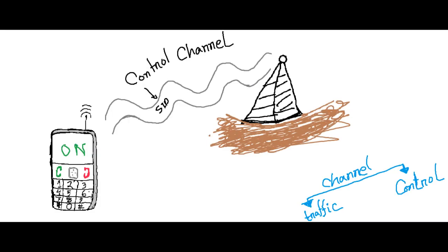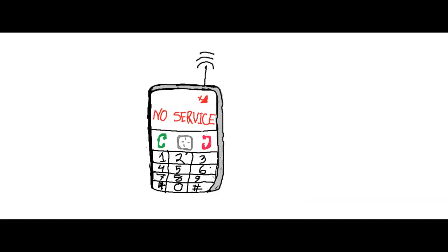When we switch on our phone, it tries to search for a SID — System Identification Number. If it finds one, it compares it with the one stored on the phone. If no SID is found, that is when you see 'No Service Available' on your mobile phone screen.